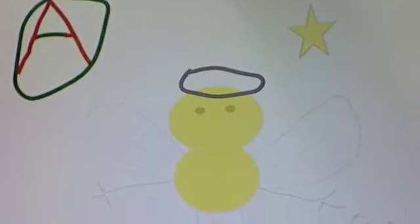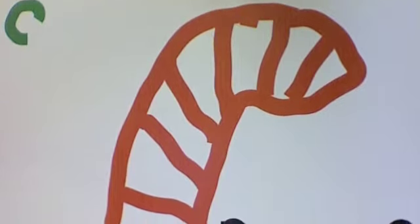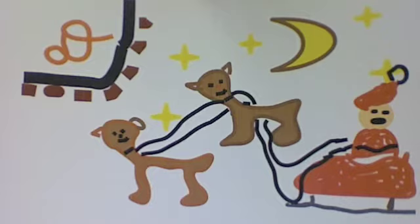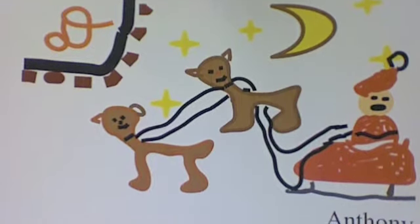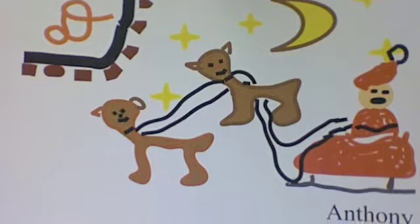A is for angels from heaven above. B is for a bell ringing on Christmas Day. C is for candy cane striped red and white. D is for a dancer on a round-the-world flight.